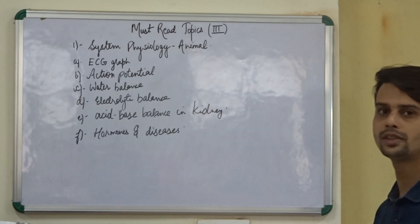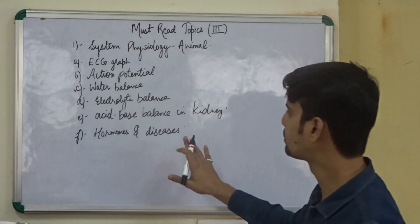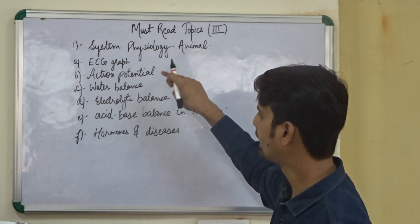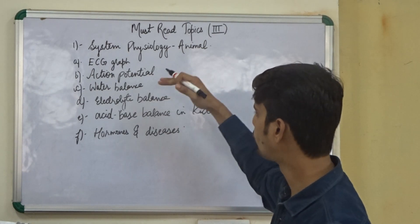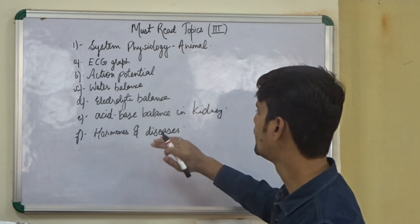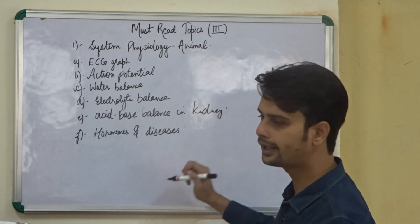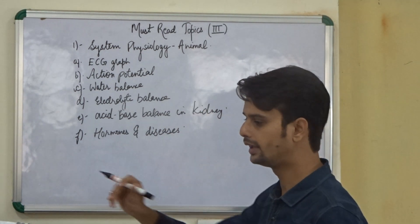So in the animal system physiology we need to focus on these 6 points only: the ECG graph, the action potential or nerve potential, water balance, electrolyte balance, acid base balance and kidney, and hormones and its related diseases.